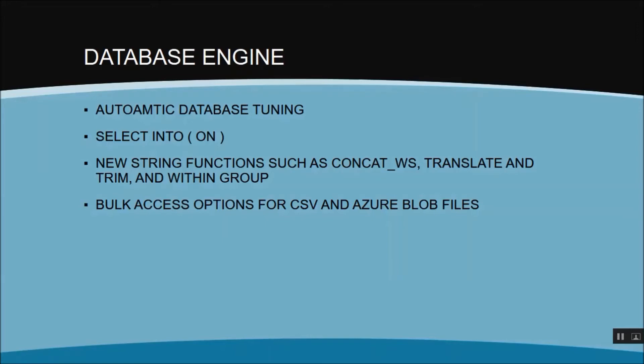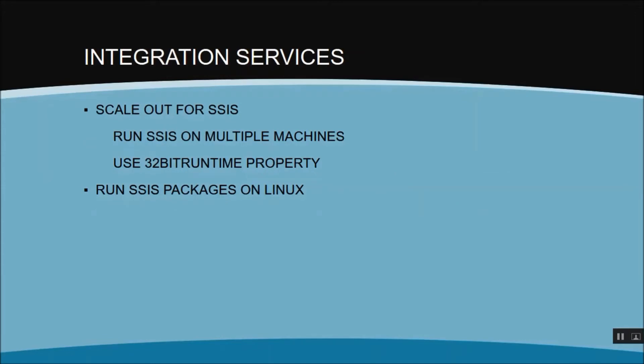The fourth feature is that bulk access options are now available for CSV and Azure Blob data files. Moving on to SSIS — Integration Services — we now have a scale-out feature, which means you can run your SSIS packages across multiple machines. There is also a 32-bit runtime property you can use if you want to run your packages in a 32-bit environment.